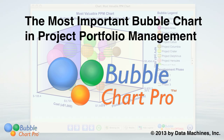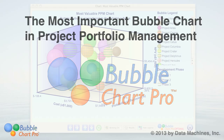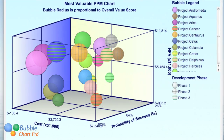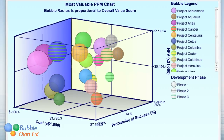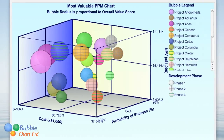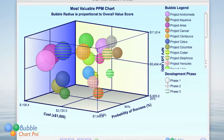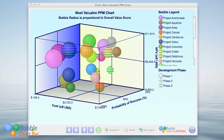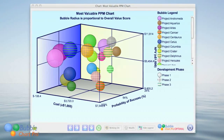Hello, my name is George Hewn and welcome to Bubble Chart Pro. The most important bubble chart in project portfolio management is the chart that simultaneously shows you the cost, risk, net present value, NPV or other value measure, and overall value score for each project in your portfolio.